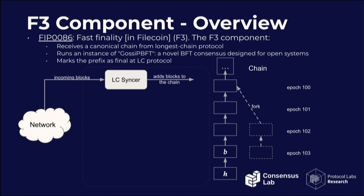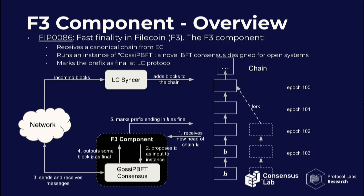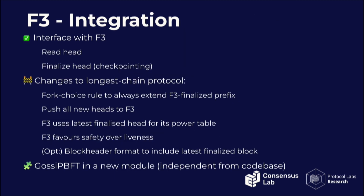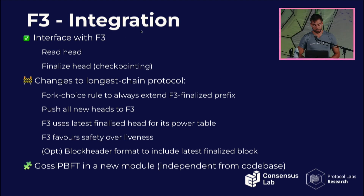Here's how it works. In a longest chain protocol, blocks come from the network, an LC syncer adds blocks to the local view of the chain, and a fork choice rule selects the heaviest chain. We add a new component that reads the head of the chain and proposes it as input to a new BFT consensus protocol. The BFT protocol runs consensus and eventually outputs a final block. The F3 component then marks the prefix up to that block as final — so up to block B will be final, even if a later block H was proposed but not finalized in this BFT iteration.